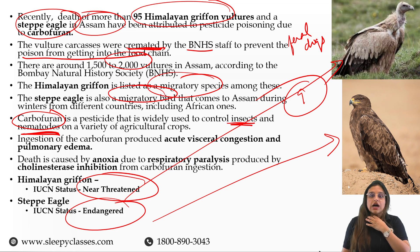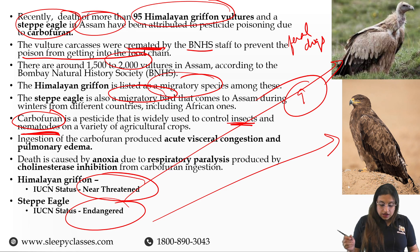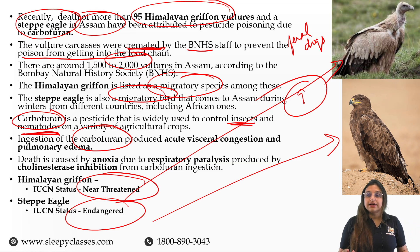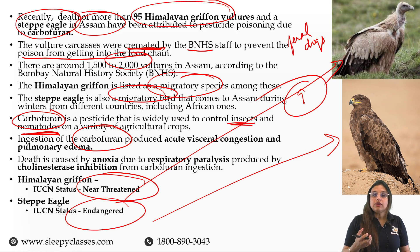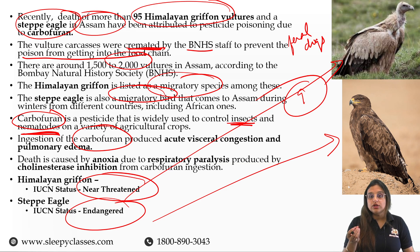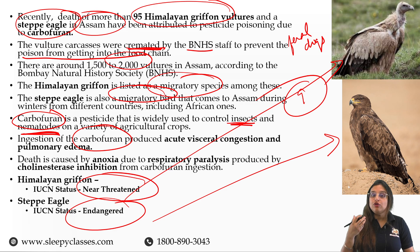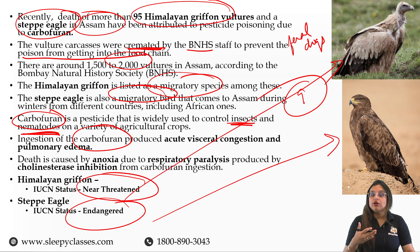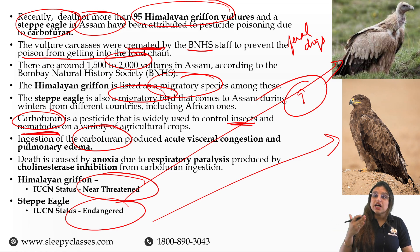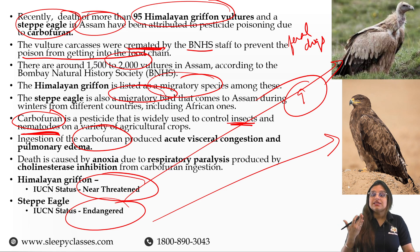That is how Carbofuran as an insecticide works. If Carbofuran is ingested wrongly — such as in suicide cases or accidental ingestion — it causes acute visceral congestion. Different visceral organs can experience congestion and pulmonary edema. Pulmonary relates to lungs, and edema means fluid — so fluid builds up in the air sacs of the lungs, preventing proper function and causing difficult breathing. In high doses, it causes respiratory paralysis.